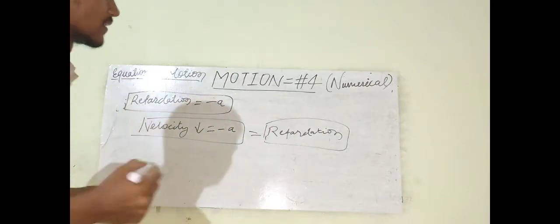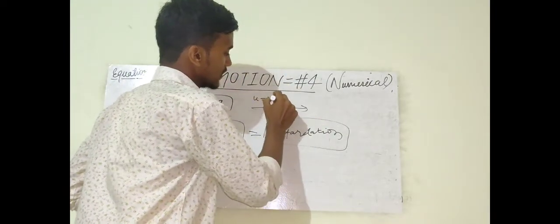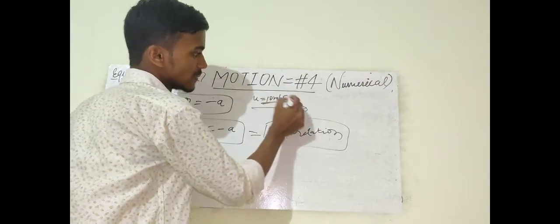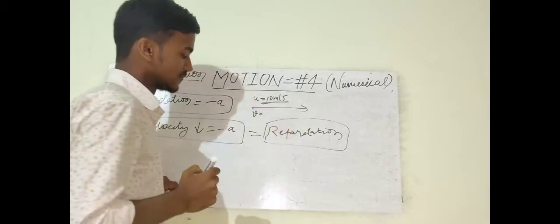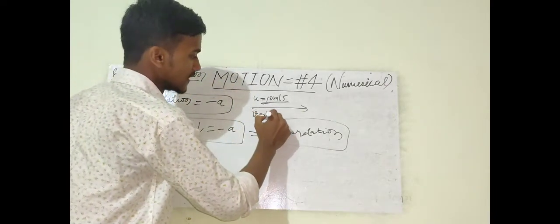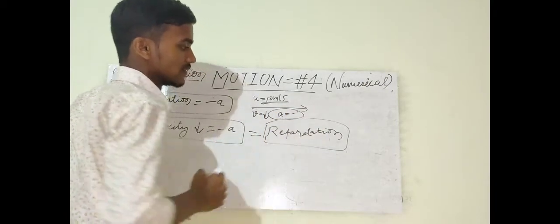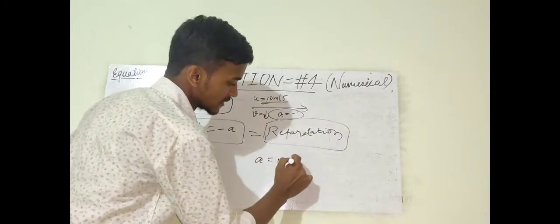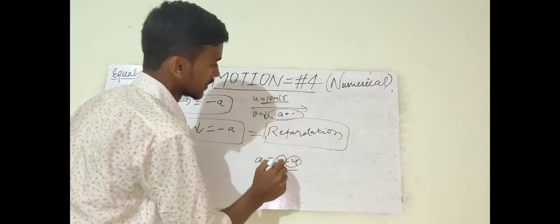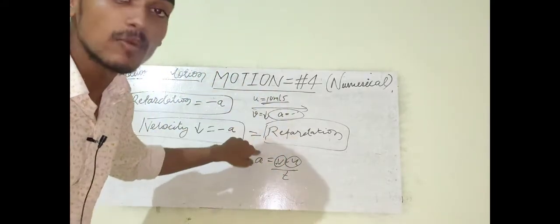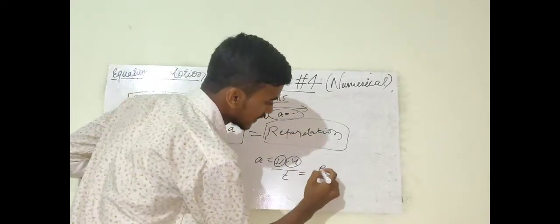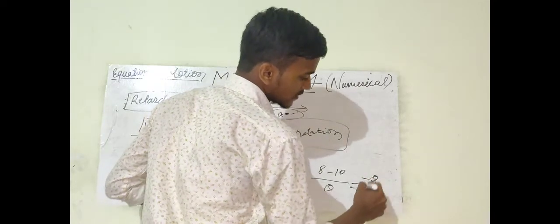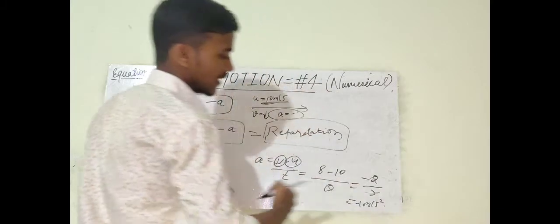In numericals, the question might say a body is moving with U = 10 m/s and a brake is applied due to an emergency. The velocity decreases, meaning acceleration will be negative. Using A = (V - U) / T: if V = 8 and U = 10, and time = 2 seconds, then A = (8 - 10) / 2 = -2/2 = -1 m/s². That's how you get a negative value.